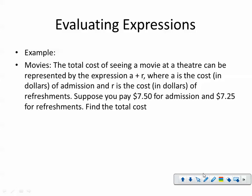Here we have a story problem. The movies. The total cost of seeing a movie at a theater can be represented by the expression A plus R. So we've got an expression being given to us. That's important information. You should probably underline that. Where A is the cost, and that's in dollars, so we want to make sure we understand that as well, of admission. And R is the cost in dollars of refreshments. Suppose you pay $7.50 for admission and $7.25 for refreshments, find the total cost. So it's important to recognize that this is telling us that we need to take this $7, which is our admission price, and this $7.25, which is our refreshment price, meaning that this is our A, and that this is our R, and we're simply going to replace these two values with the A plus R that we see up here.